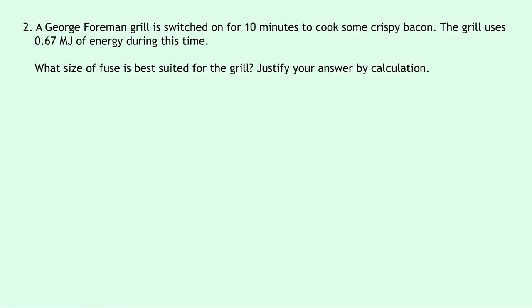Question 2 says that a George Foreman grill is switched on for 10 minutes to cook some crispy bacon. The grill uses 0.67 megajoules of energy during this time. It then asks what size of fuse is best suited for the grill. Justify your answer by calculation.